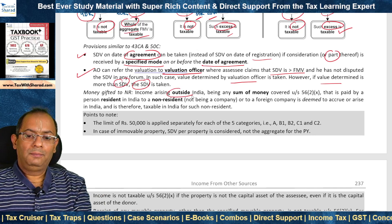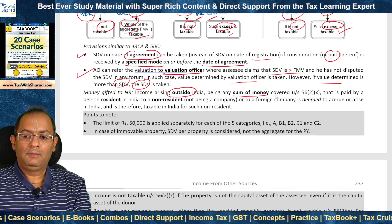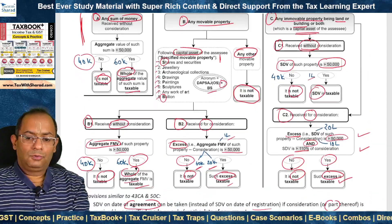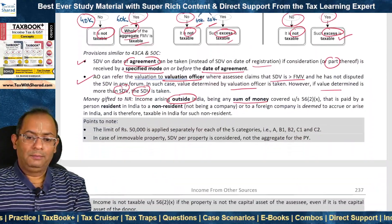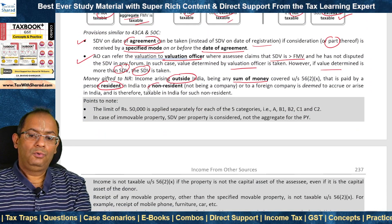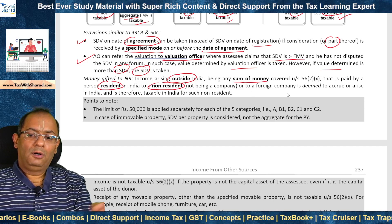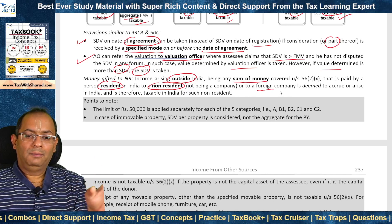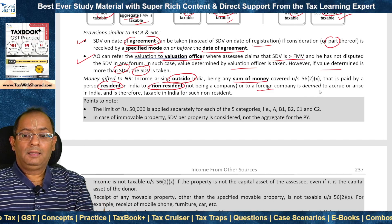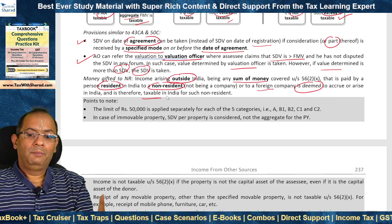There could be a situation where income arises outside India on account of a sum of money covered under Section 56(2)(x) — where the sum of money is paid by a resident in India to a non-resident (not being a company, or if a company, then to a foreign company). In that case, such income is deemed to accrue or arise in India under Section 9 and therefore becomes taxable in India for such non-resident as well.